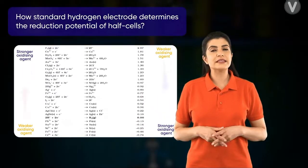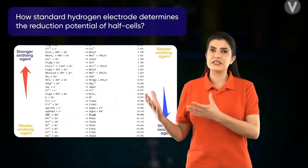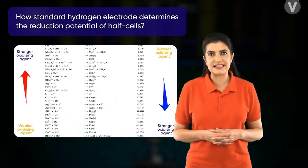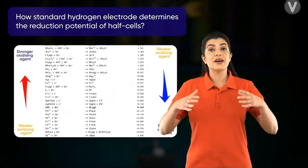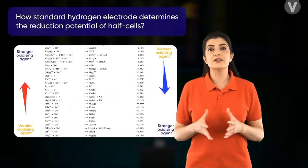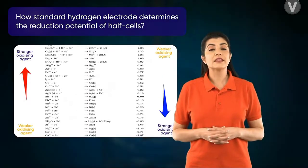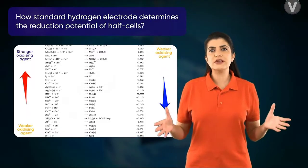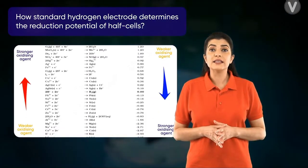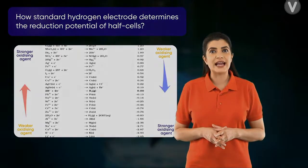So the standard hydrogen electrode allows us to determine the oxidation or reduction potentials for half cells. Thanks to this, there are lists of various standard reduction potentials like the one you're looking at here. This list will be extremely useful for understanding a lot of things about chemical reactions.